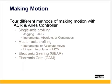The ACR and Ares controller allows four different types of motion. Single axis moves are done with the JOG — these can be incremental or absolute distance commands or continuous velocity moves. Interpolated or coordinated moves use the master axis profiling and allow multi-axis moves. Gearing and caming can also be programmed, but will be covered in the advanced motion training.